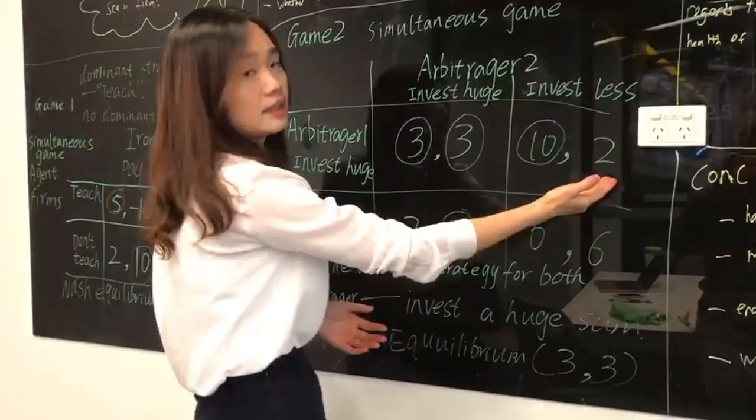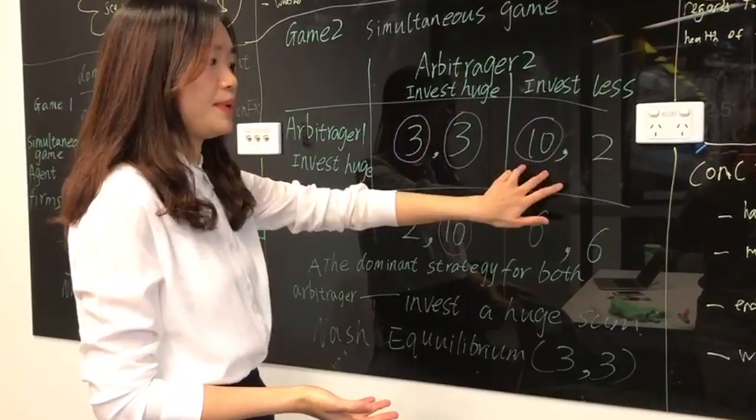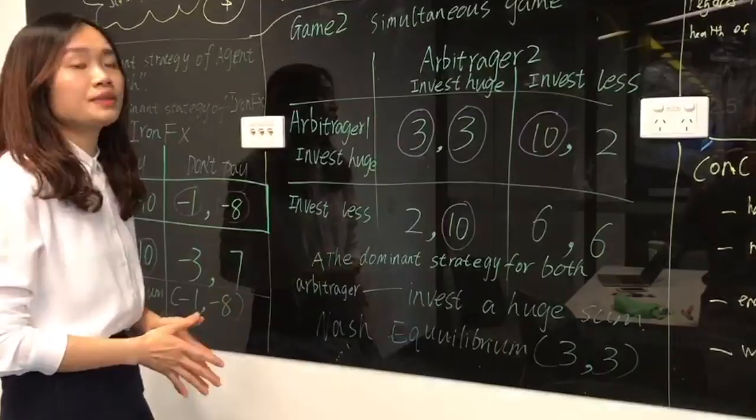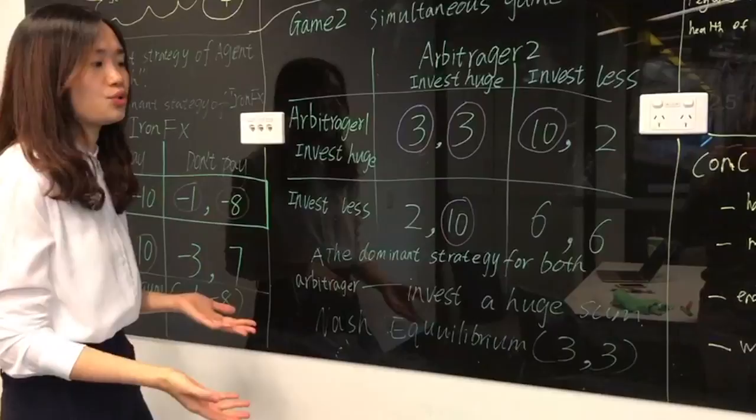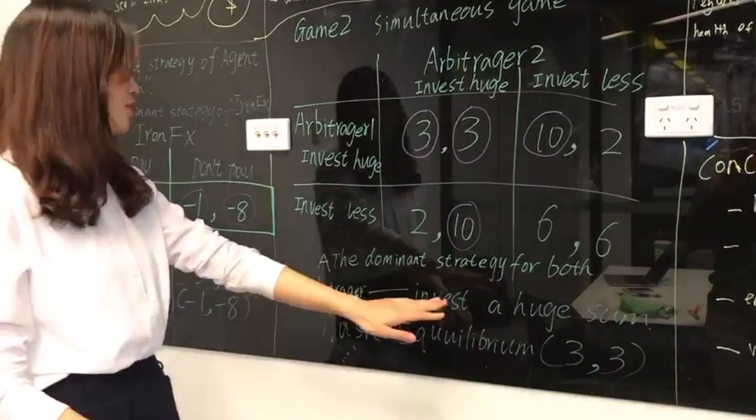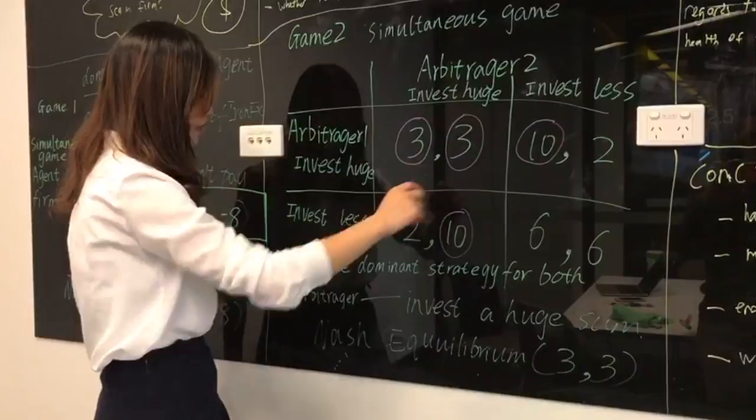Since there are no arbitrage into the market, the profit will be 10. And if both of them invest less, which means they will have no arbitrage into the market, it will increase the payoff to 6, 6. And the dominant strategy for both arbitragers is to invest huge sums. So this is the Nash equilibrium for this game.